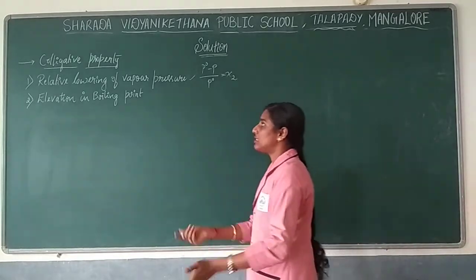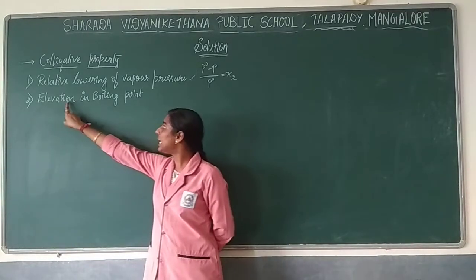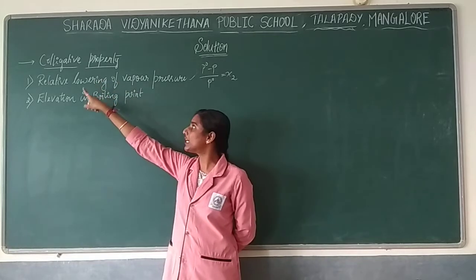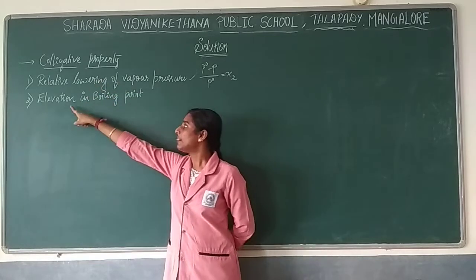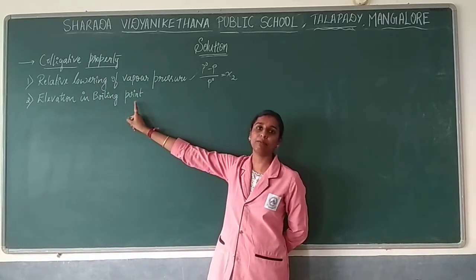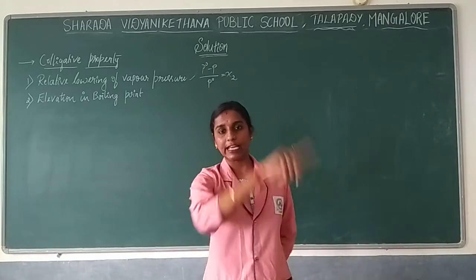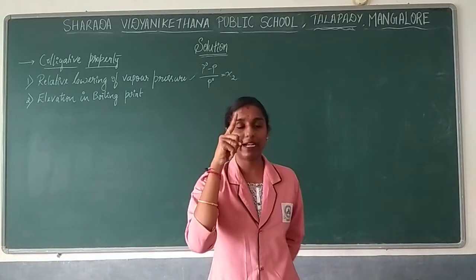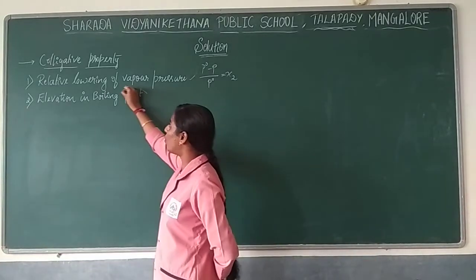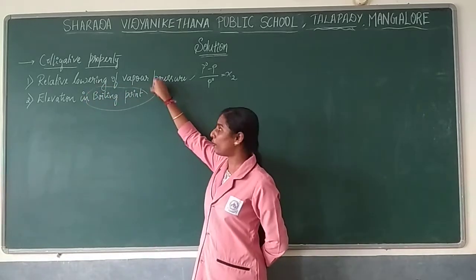The next colligative property we will deal with is elevation in boiling point. This is the second colligative property — elevation in boiling point means an increase in boiling point will take place. Before going through this concept, we should know what is meant by boiling point.